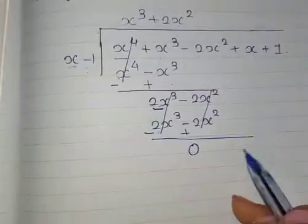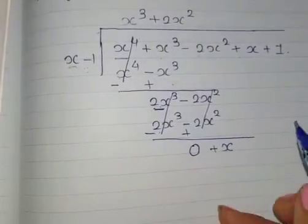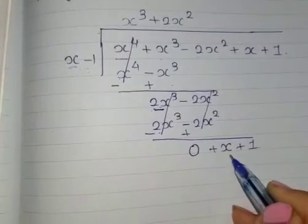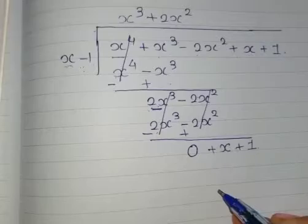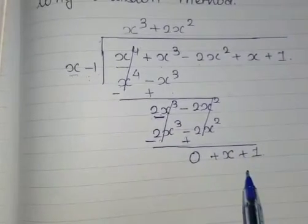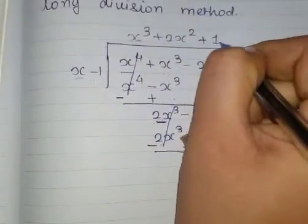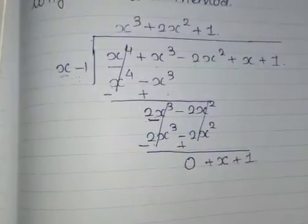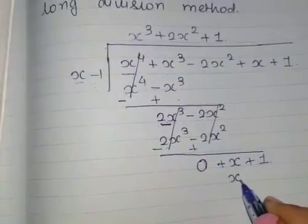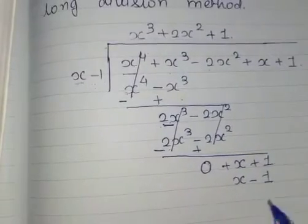Now let this X come down. We will also take this 1 as well since we are having just one term over here. With what we need to multiply X? We want X only again, so we need to multiply it with just 1. So 1 into X will give us X, 1 into minus 1 will give us minus 1.